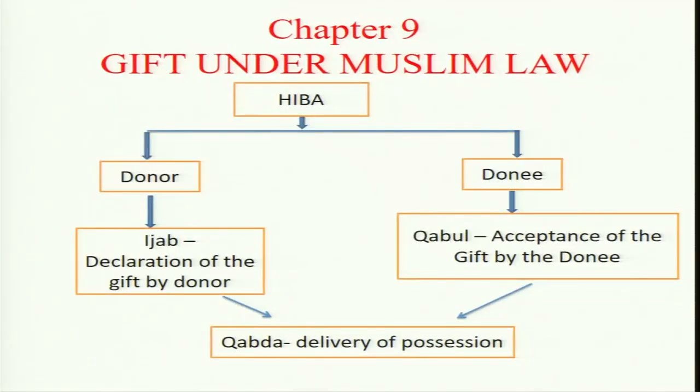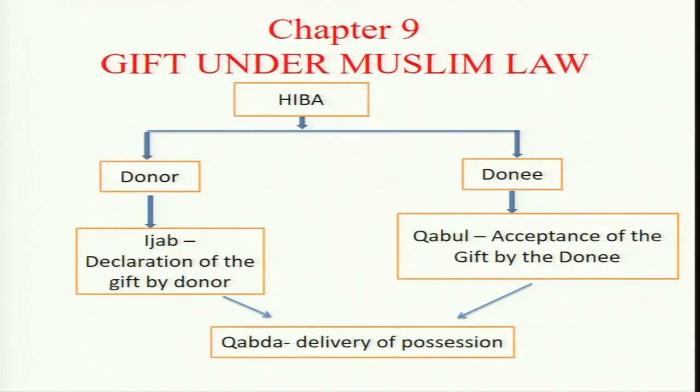On the other hand, where property is transferred by way of gift, the donee will get absolute property immediately — just after the completion of the transaction. This is the key distinction between section 122 of the Transfer of Property Act and Muslim gift. Under Muslim law, the donor makes an offer (ijab), that offer is accepted by the donee (kabul), and property is delivered (qabda) — with those three elements the gift is complete.